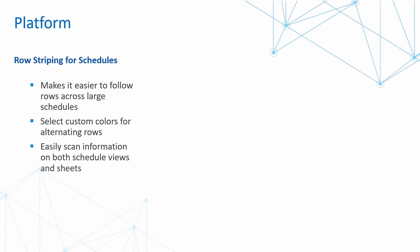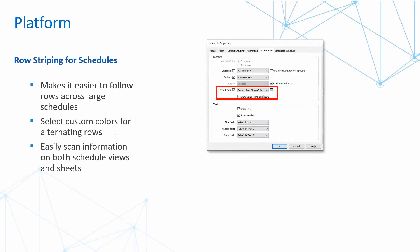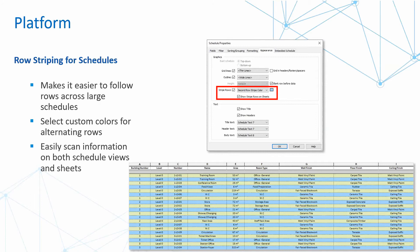When it comes to schedules, we now have the ability to do row stripping, making it easier to follow rows across a large schedule. In the schedule properties, go into appearance, select striped rows, activate it, and then choose a color for the row stripping. You can then easily scan information on both schedules and views on the sheet. It is unbelievable — we definitely needed this one.